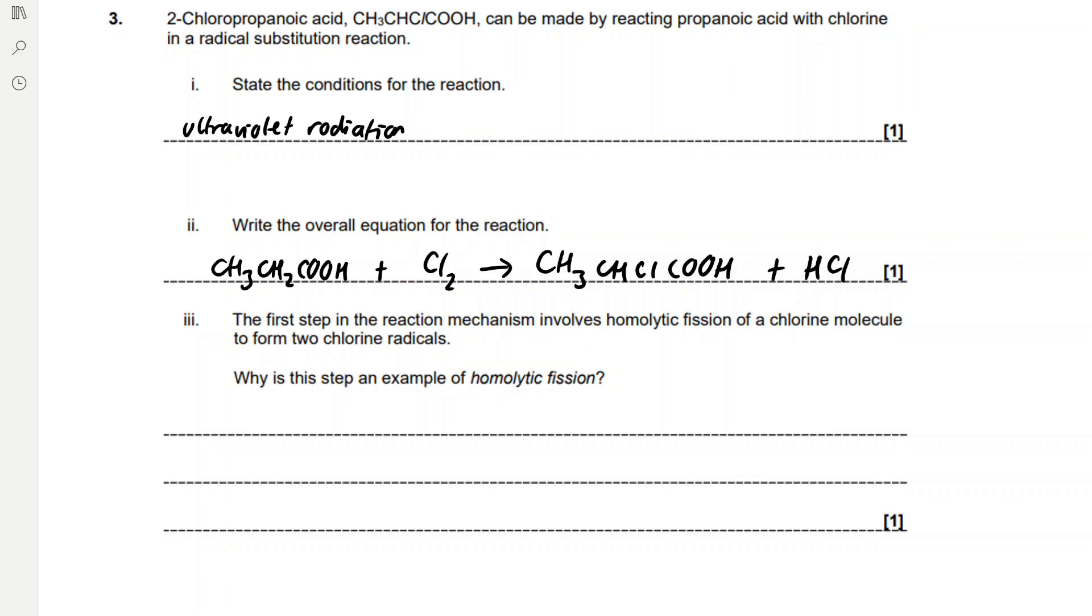The first step in the reaction mechanism involves homolytic fission of a chlorine molecule to form two chlorine radicals. Why is this step an example of homolytic fission? We need to define homolytic fission and apply this to the context. Homolytic fission is when we break a covalent bond and one electron goes to each atom forming two radicals.